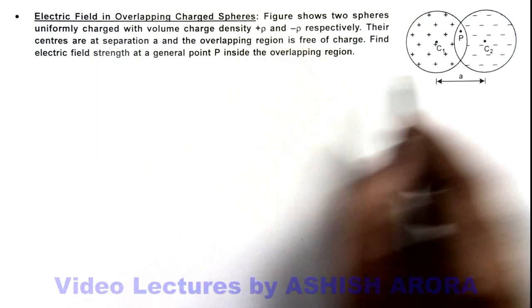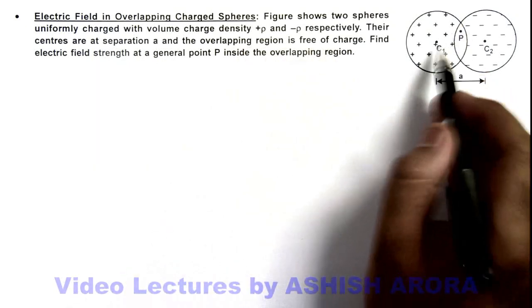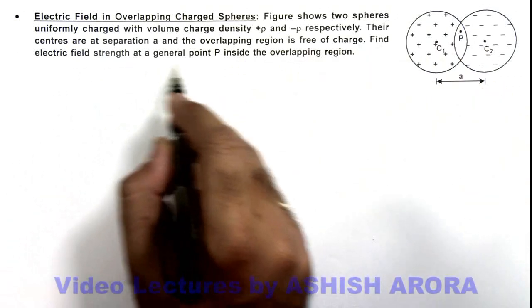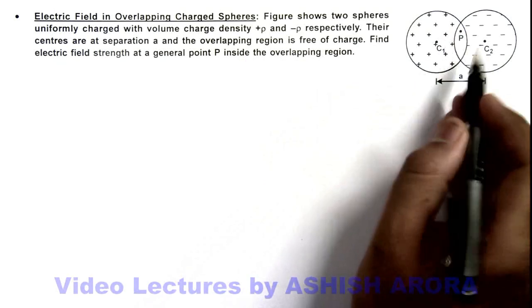The overlapping region is free from charge because equal and opposite charges are overlapped. We are required to find the electric field strength at a general point P which is inside the overlapping region.